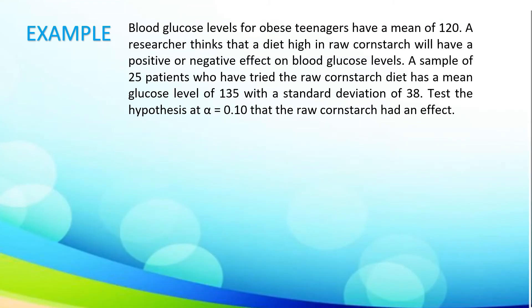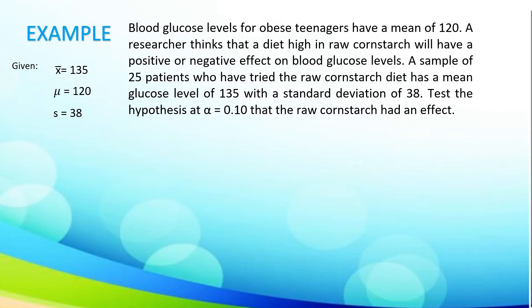Let us take another example. Blood glucose levels for obese teenagers have a mean of 120. The researcher thinks that a diet high in raw cornstarch will have a positive or negative effect on blood glucose levels. A sample of 25 patients who have tried the raw cornstarch diet has a mean glucose level of 135 with a standard deviation of 38. Test the hypothesis at alpha equal to 0.10 that the raw cornstarch had an effect. Let us identify the given: sample mean is 135, population mean is 120, standard deviation of the sample is 38, sample size is 25 patients, and the level of significance is 0.10.